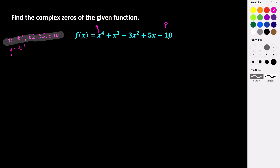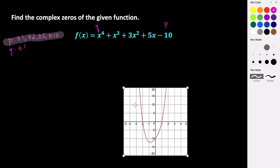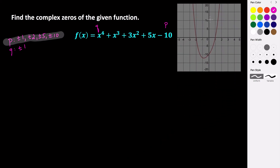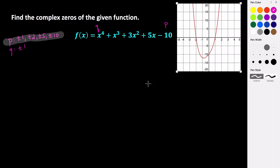Normally you would use synthetic division and go through all eight of these to figure out which ones are your zeros. But we're going to cheat a little bit and let the graph guide us in the right direction. This here is the graph of this fourth degree polynomial, and we can see that there are two places where it crosses the x-axis: at negative two and at one.